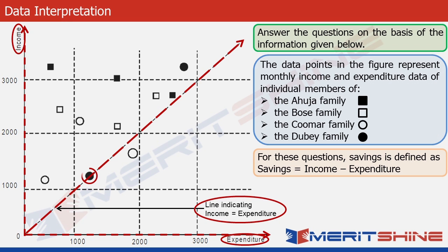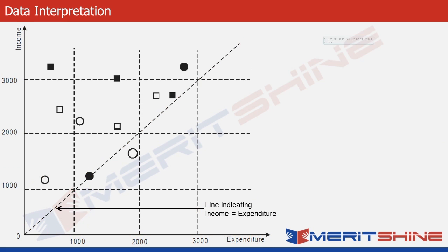For example, look at this person — since it's a black circle, he belongs to the Dube family. His expenditure is around 1250, and if you look at the y-axis, his income is also around 1250. So as per the question, his savings are zero.